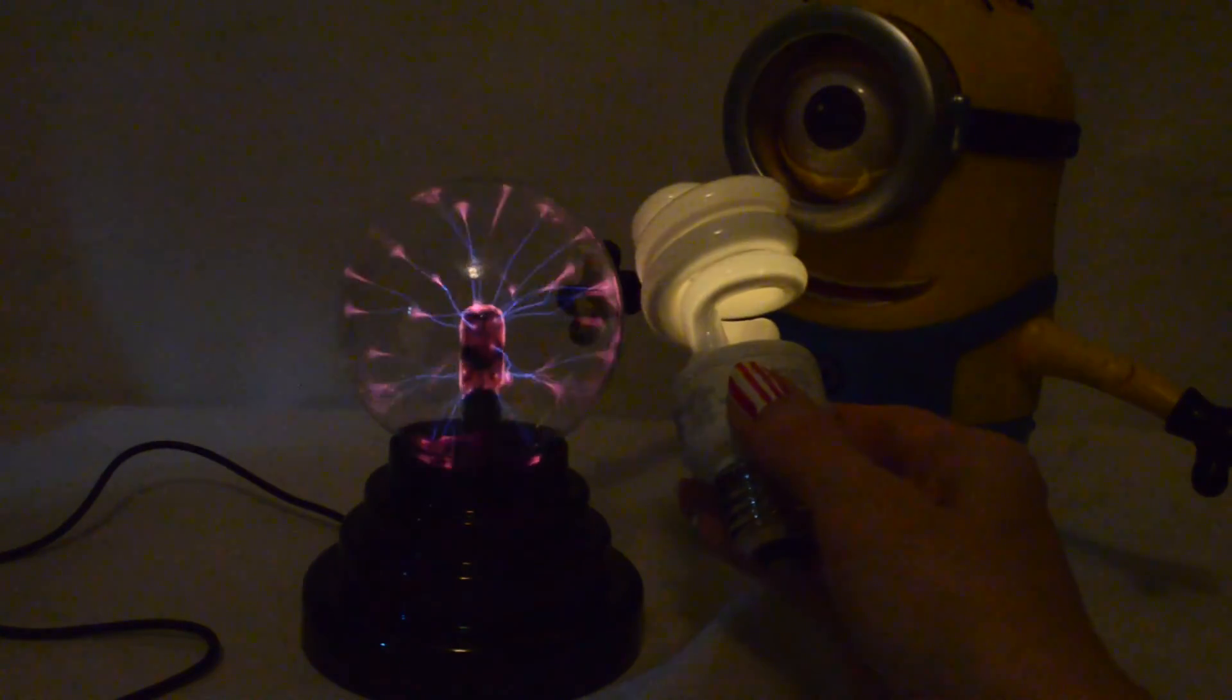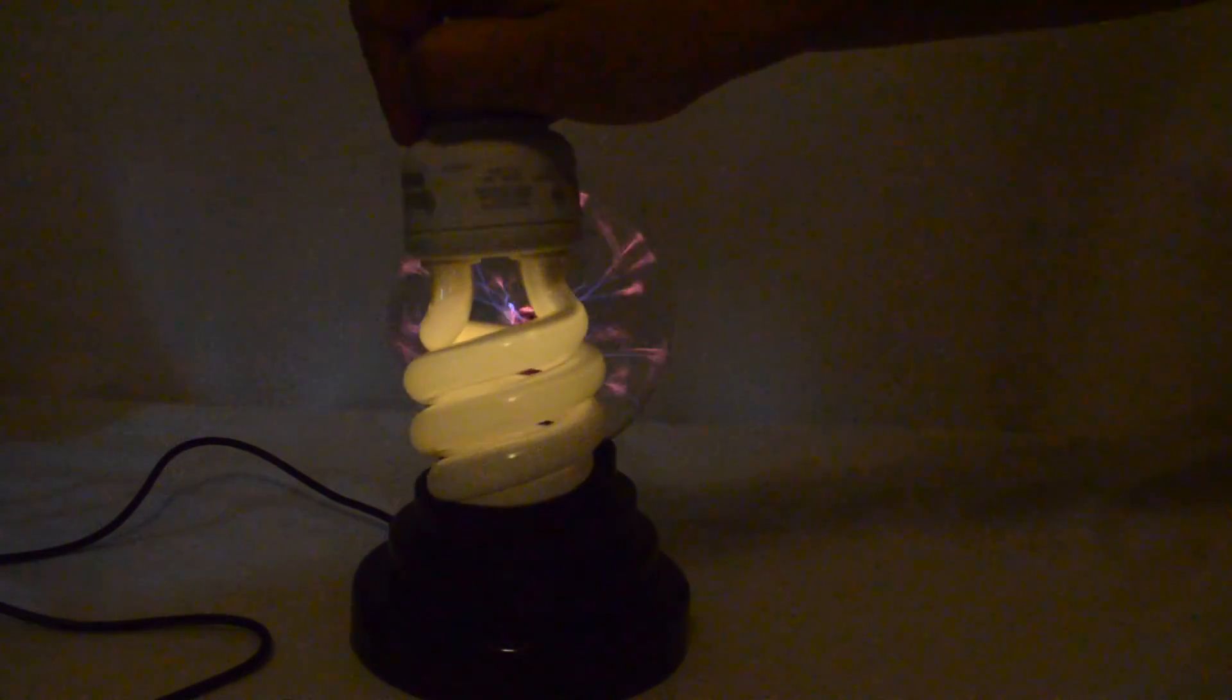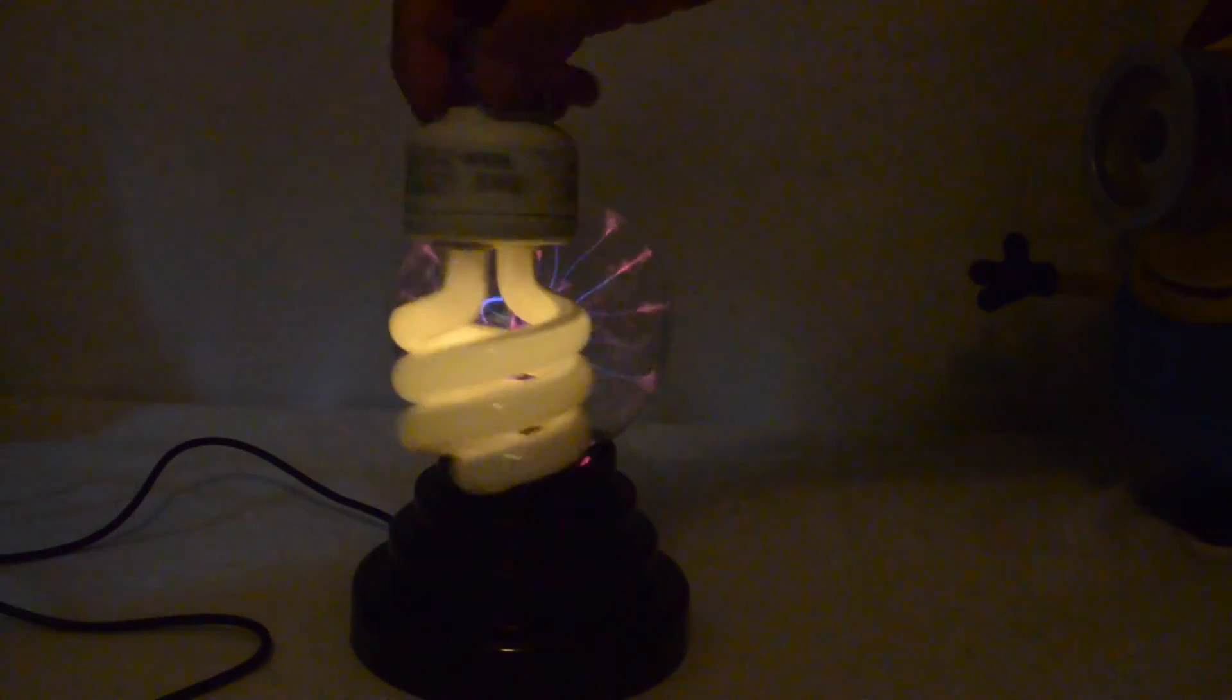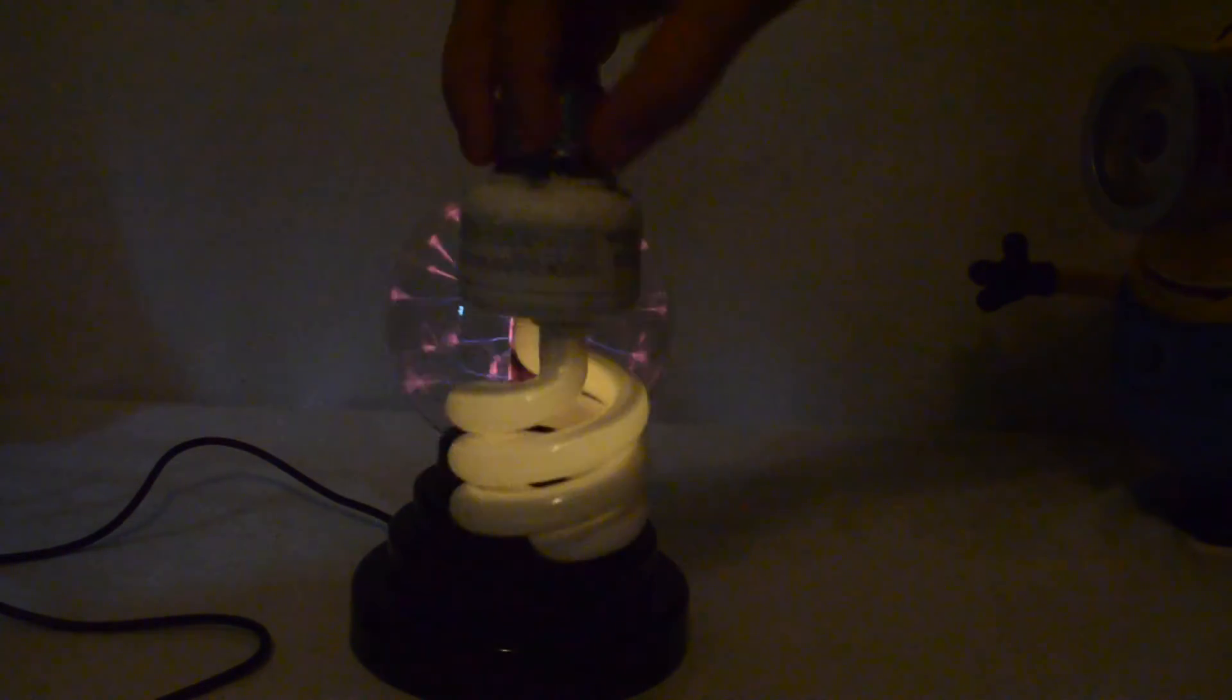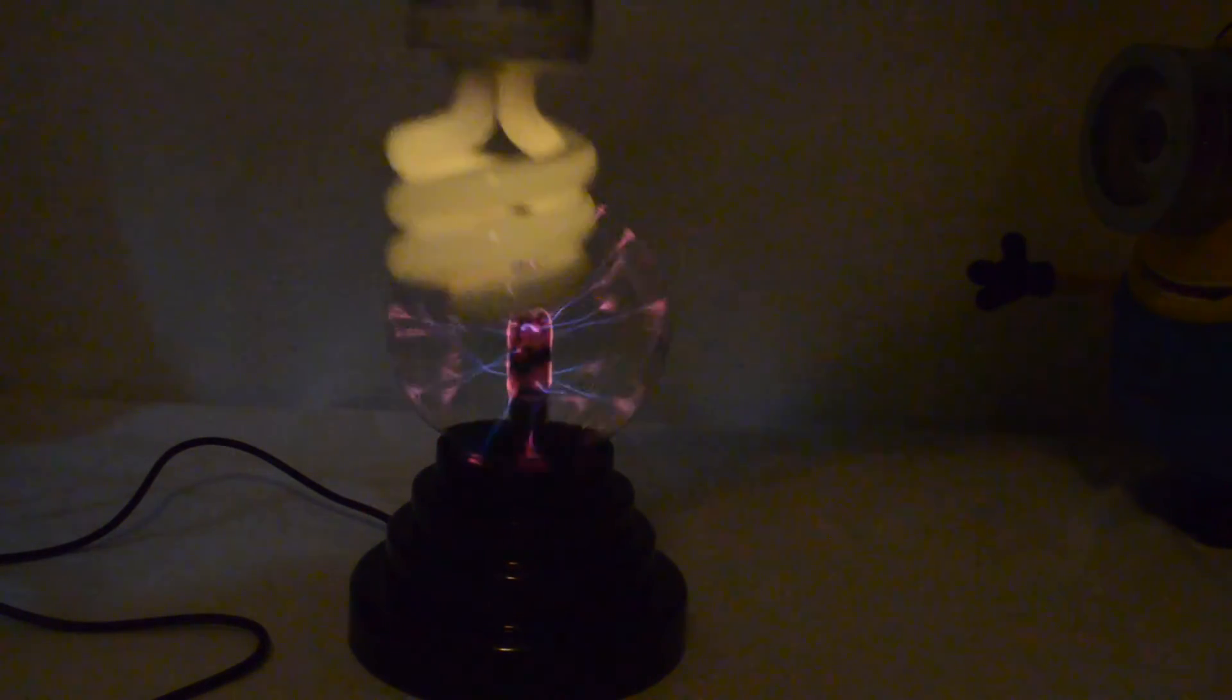The light bulb lights up when it gets close to the ball. Here's a really cool trick. This is a compact fluorescent light bulb. The electric field from the plasma ball excites the gases in the light bulb and makes it light up.